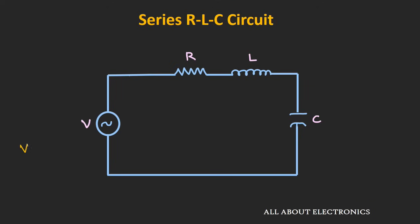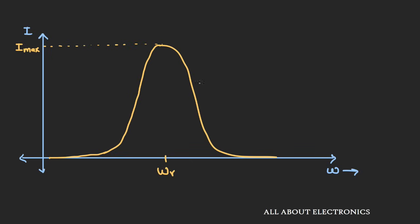Now let us see the resonance condition in the series RLC circuit. We have applied an AC voltage source V0·sin(ωt), and because of this voltage source we are getting some current through the circuit. As we change the frequency of this voltage source, at one particular frequency we will get a maximum current flowing through the circuit — that is known as the resonant condition. At lower frequencies there will not be any current flowing, and also at higher frequencies there will not be any current. As we move towards the resonant frequency, the current will suddenly increase, and at resonant frequency we find the maximum current. As we move away from the resonant frequency, the current will fall down and eventually at higher frequencies this current will go to zero.